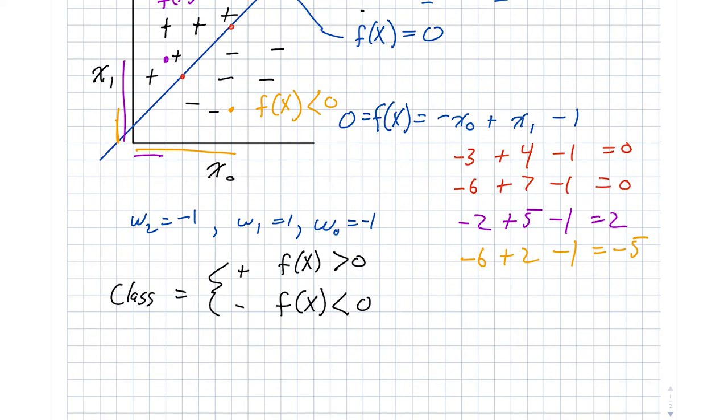Now this does leave, when we're actually implementing things, an element of ambiguity in that what happens when a point falls exactly on the line. And in practice, what we do is we make an arbitrary choice. So I'm going to add in an equal sign right here. So if f of x is greater than or equal to 0, then we're going to call it positive. And in the long run, this doesn't actually result in any problems for us.